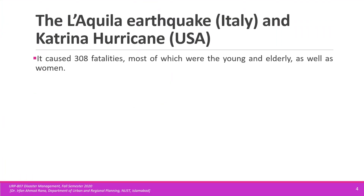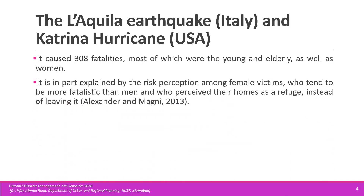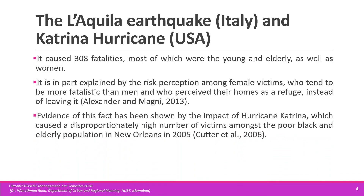Another case study: an earthquake happened in Italy which killed around 308 people, and most of the victims were young, elderly, and women. It was traced that female victims had poor risk perception, which caused vulnerabilities among women and a huge proportion of deaths. Another case study: Hurricane Katrina landed on New Orleans, USA, and most of the people who died were mostly poor, Black, and elderly.